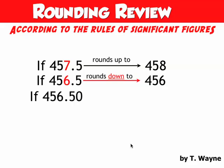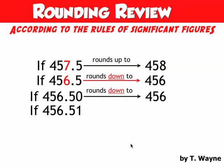So for example, 456.5, zero, rounds down to 456. 456.5, one, well, to the right of the five, it's not all zeros. There's a one there. So that's actually going to round up to 457.